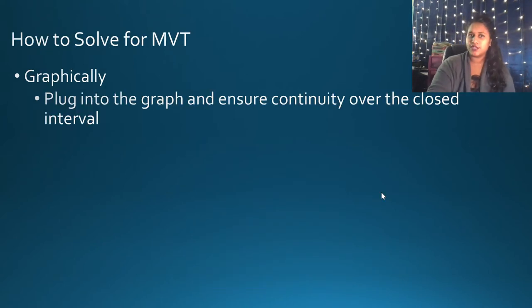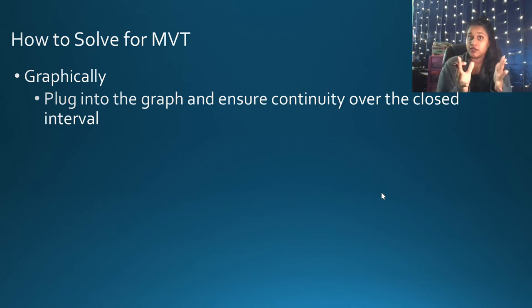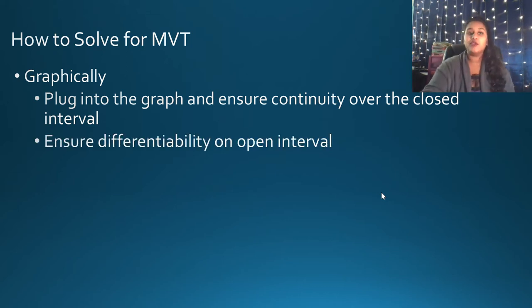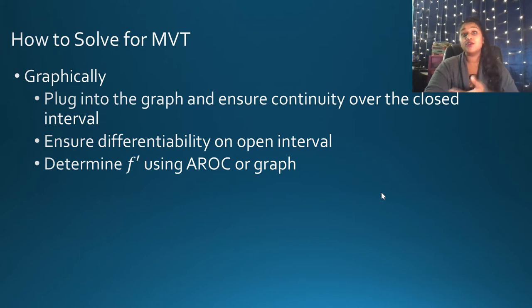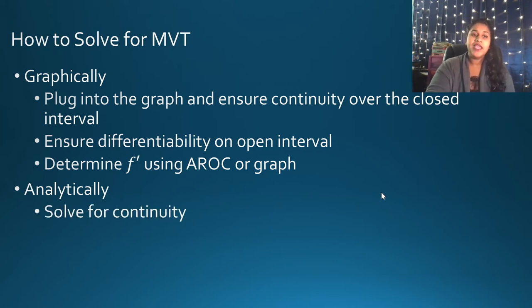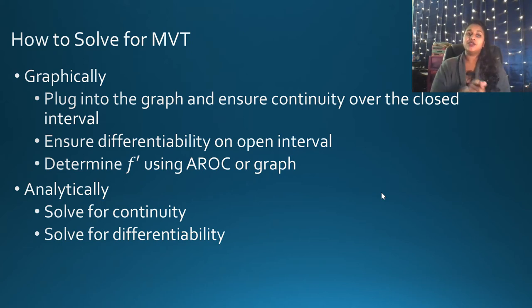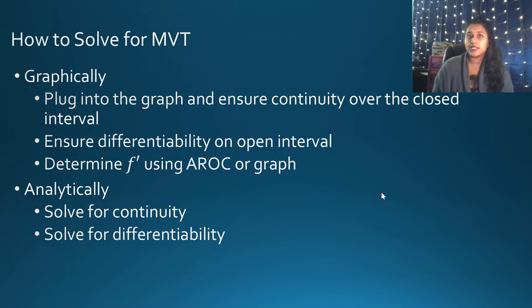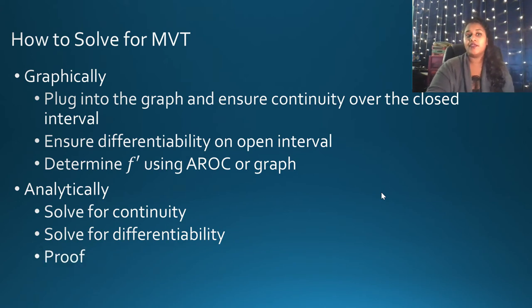So how do we solve for it? Graphically, it's rather simple — if you can see the function is continuous and differentiable, you can ensure it meets all assumptions, then identify slopes or information from the graph itself. Analytically is where we solve MVT more often. First, solve for continuity and differentiability by taking the derivative and checking its domain. You can also assume continuity for certain parent functions — for example, a polynomial is continuous on that interval unless it's a piecewise function. Then show your proof that instantaneous must equal average rate of change, and solve for X or C.